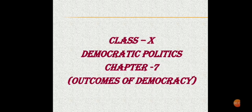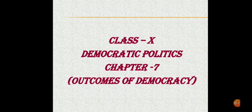This chapter exclusively talks about the outcomes of democracy. In this chapter, so far we have been understanding how democracy works and what has been the scenario in India. When we talk about the outcomes of democracy, it is people-centric and it tries to maintain the equality of people.